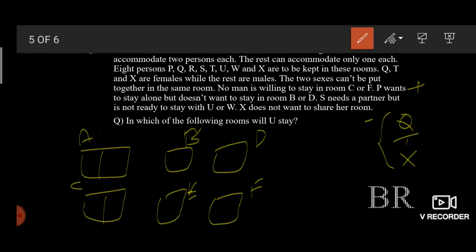The two sexes can be put together in the same room. So it means that there can either be both males or both females in A and C, but a male and a female cannot sit together in these rooms. No man is willing to stay in room C, so this indicates that room C has both the females. And F also has a female. So C and F are completely occupied by female and rest are occupied by male.